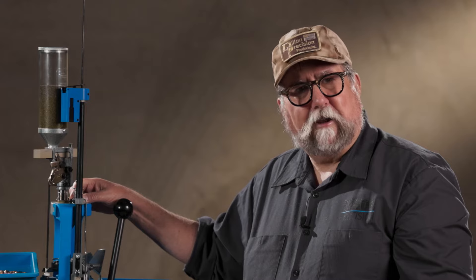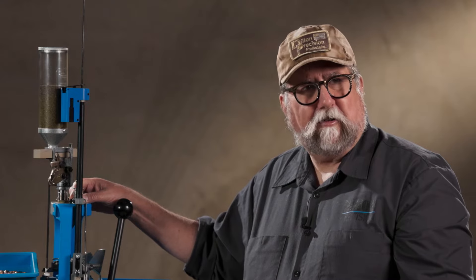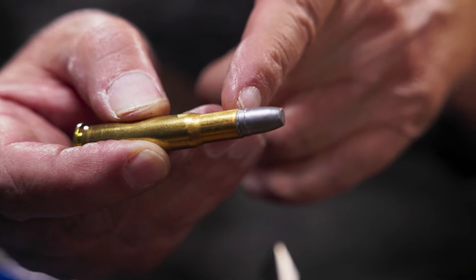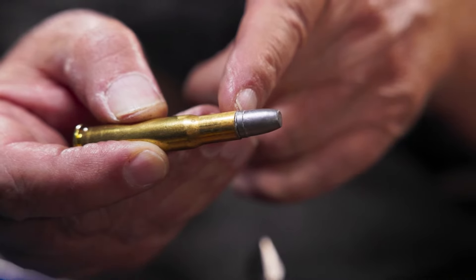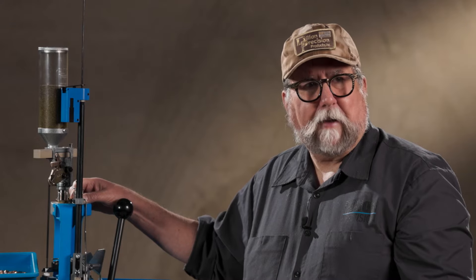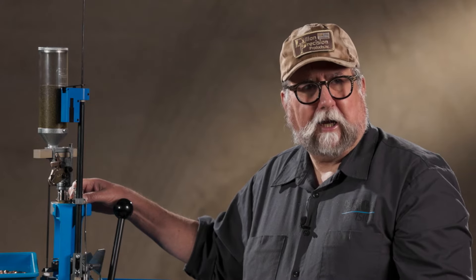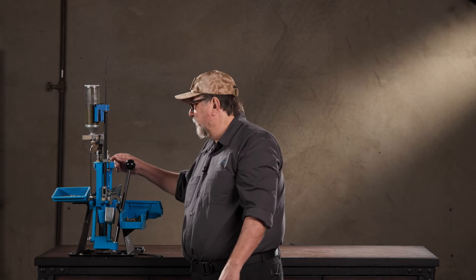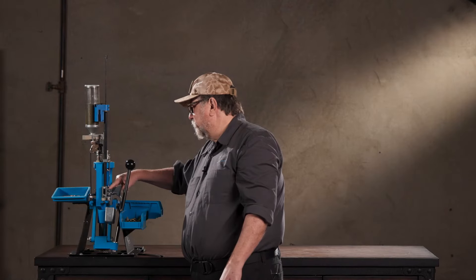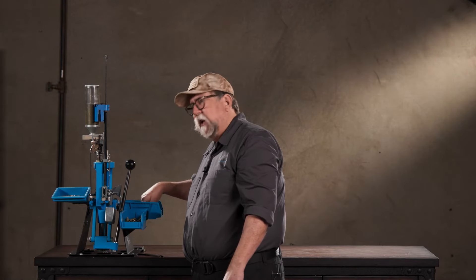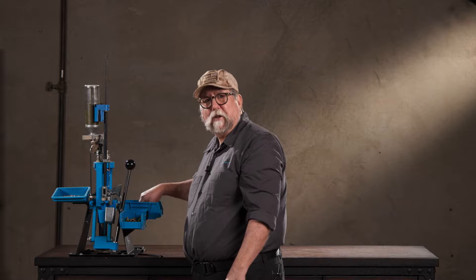Separate crimp is generally used if you're shooting your ammunition either through a tubular magazine like a lever action rifle, or if you're shooting it through a semi-automatic firearm. The crimp keeps the bullet from being pushed back into the case. Finally, when you advance it again, the loaded cartridge hits the ejector wire, comes down the chute, lands in the bin.